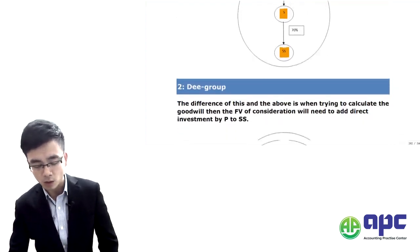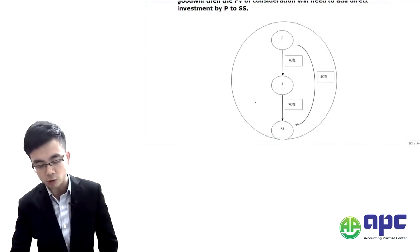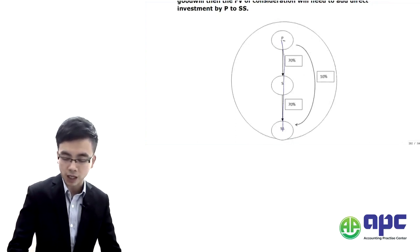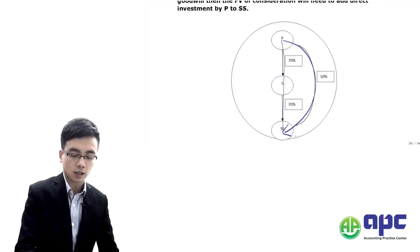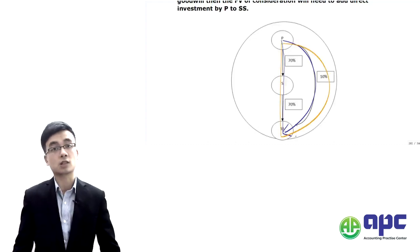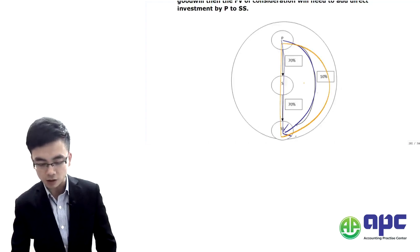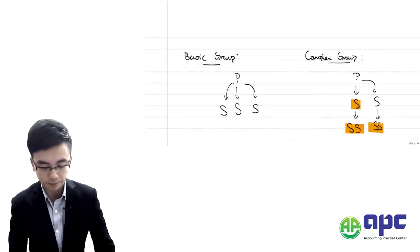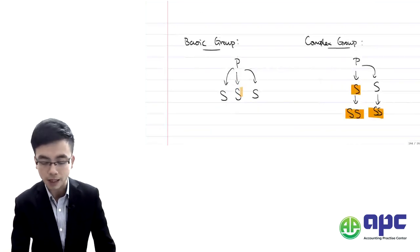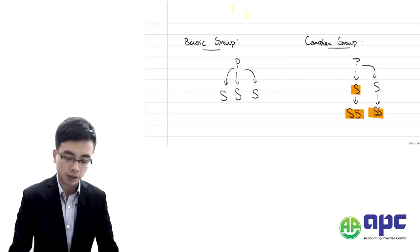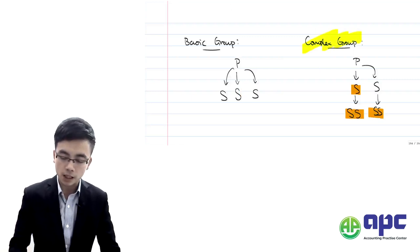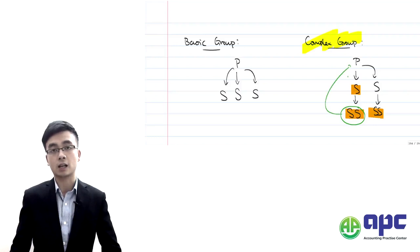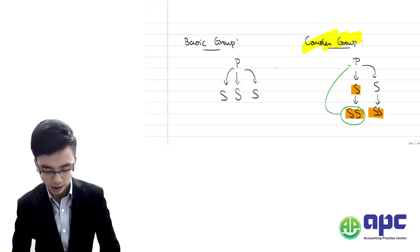We also have the D-group structure, where not only does the parent control the sub-subsidiary through the subsidiary, but the parent also has a direct shareholding in the sub-subsidiary — so it looks like a 'D'. Our aim in the complex group is to consolidate the sub-subsidiary into the parent's account, not the subsidiary's account. We are standing from the parent's perspective.